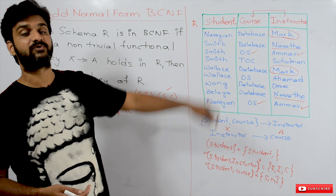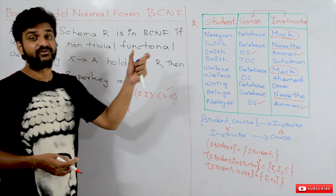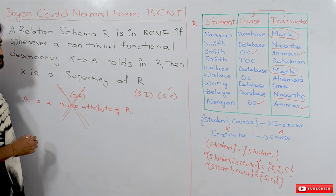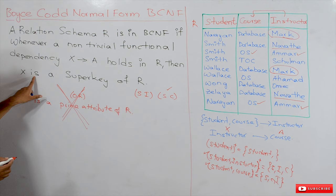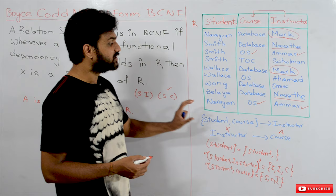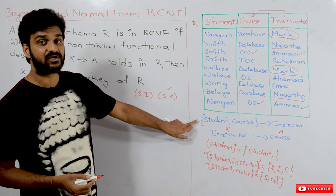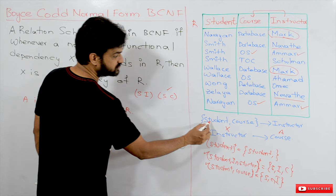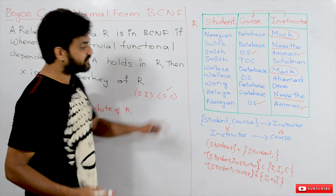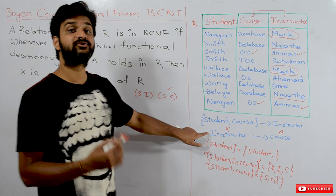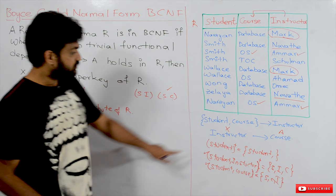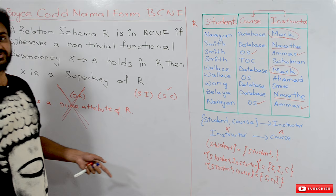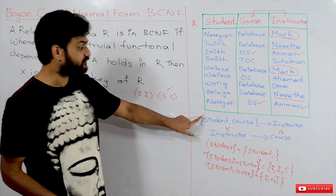That is the reason why Boyce-Codd Normal Form is called a stricter version of Third Normal Form — it does not accept the prime attribute property. The only property accepted by BCNF is that X must be a super key of R. So checking the second functional dependency, Instructor determines Course, against BCNF: is Instructor a super key? No. Therefore this functional dependency violates BCNF and must be decomposed.